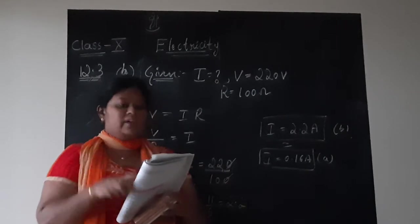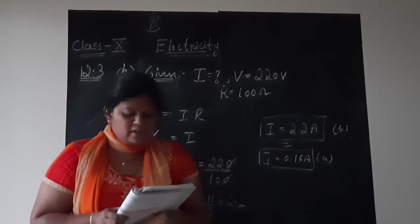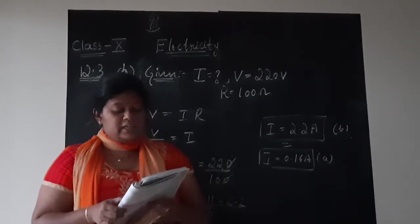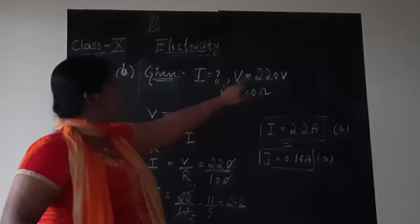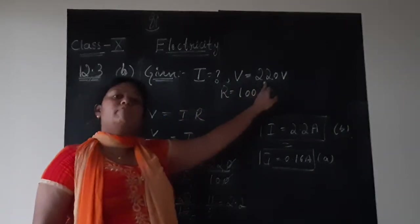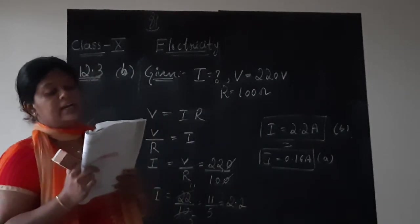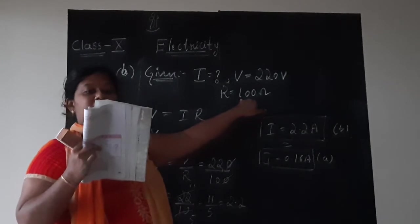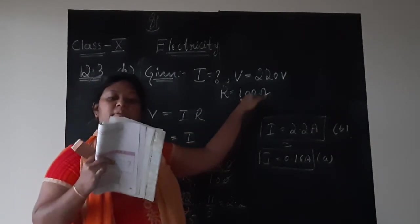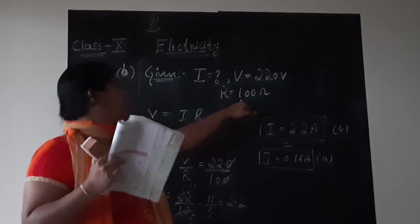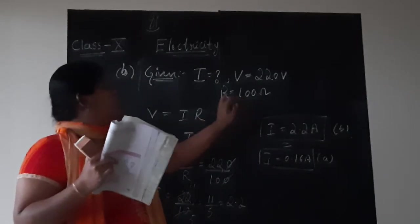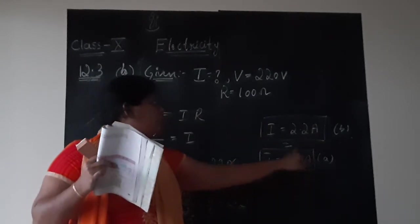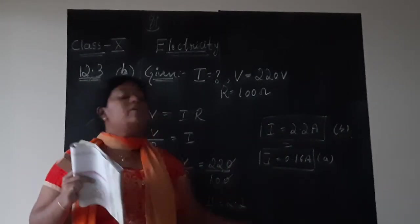Now they have given one sentence. Note the difference of current drawn by an electric bulb and electric heater from a 220 volt source. If you observe voltage V was same for both the electric heater and electric bulb. It was 220 volt. But resistance for the filament bulb was 1200 ohms whereas for electric heater is 100 ohms. So resistance is only varying but voltage is kept constant. 0.16 and 2.2 ampere. There is so much variance.